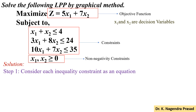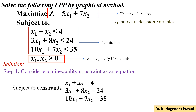The first step is to consider each inequality constraint as an equation. For this, replace the inequality symbol with the equal symbol in the constraints. Then the constraints will become: x1 plus x2 equal to 4, 3x1 plus 8x2 equal to 24, and 10x1 plus 7x2 equal to 35.